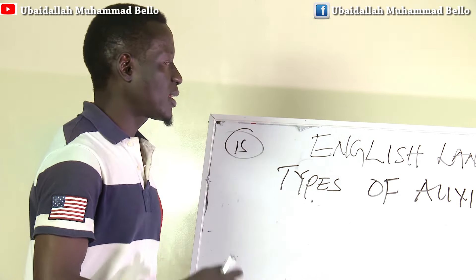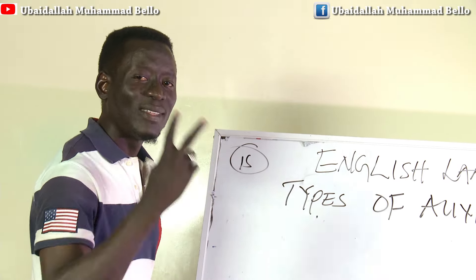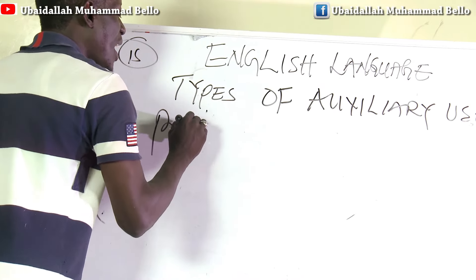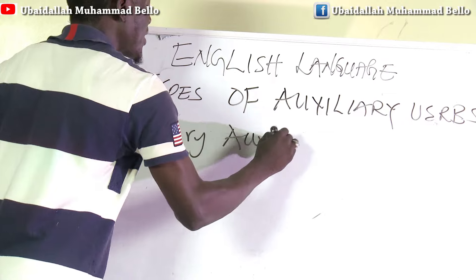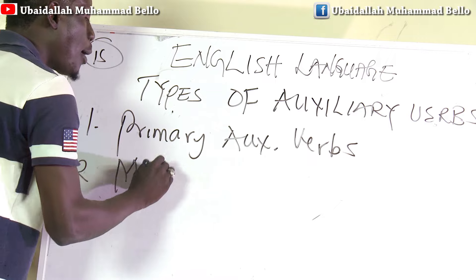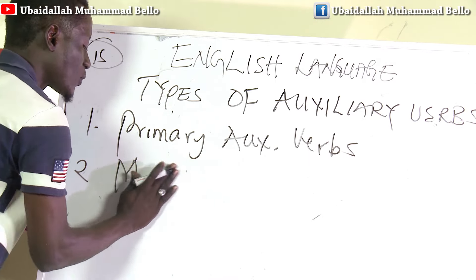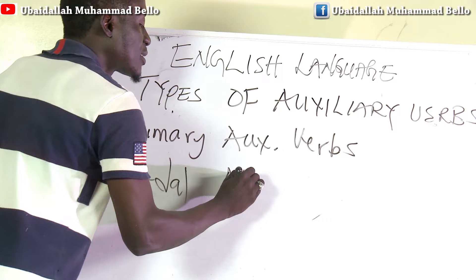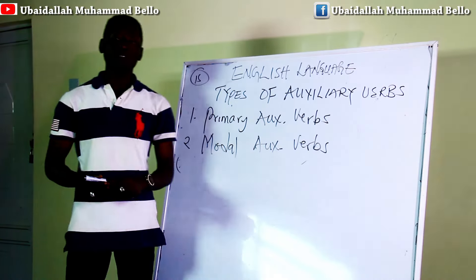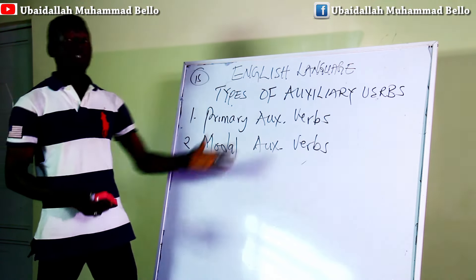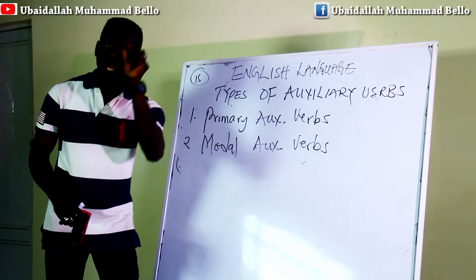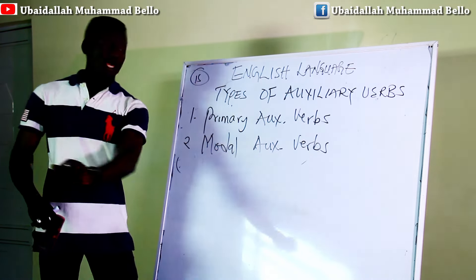Now we have types of auxiliary verbs. There are two major types: one, primary auxiliary verbs, and two, modal auxiliary verbs. These are the two major types of auxiliary verbs.